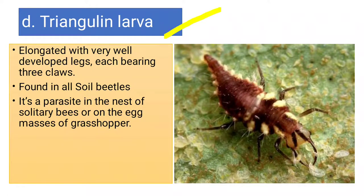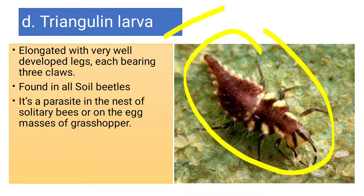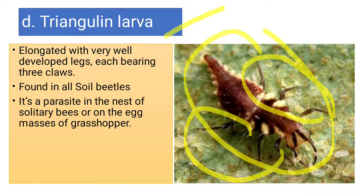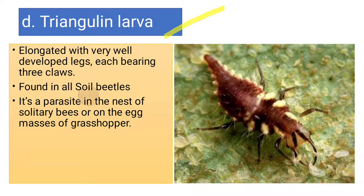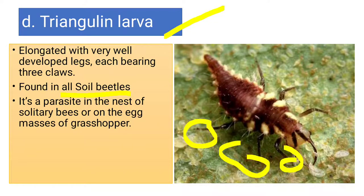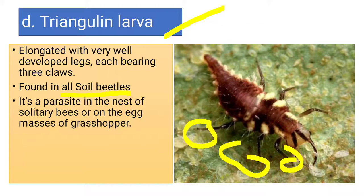Fourth within oligopod is the triangulin larva. Its body is elongated and the thoracic legs are very well developed and long. The larvae of oil beetles are of triangulin type. The most important identification feature is that at the terminal end of their legs, three claws are present. These are identified by the three claws at the base. They are important parasites that enter the nests of solitary bees and are very harmful to grasshopper eggs and solitary bee populations.